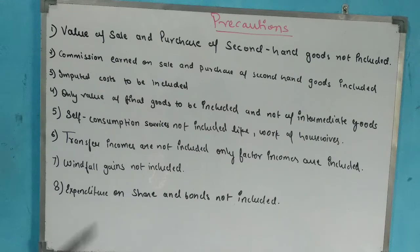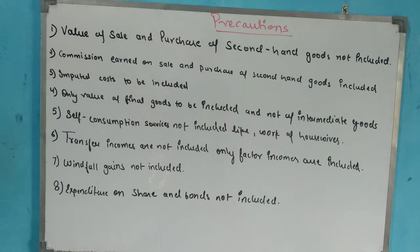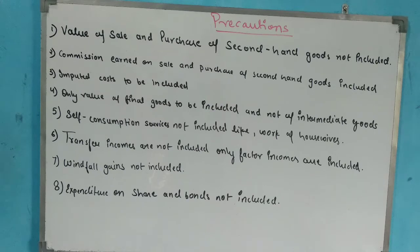The last precaution: expenditure on shares and bonds is not included in national income. Shares and bonds are merely paper claims — no actual production takes place in the country through them. If we were to add such expenditure, our national income would become either too high or too low, which would be incorrect. Therefore, expenditure on shares and bonds is not included.